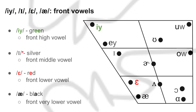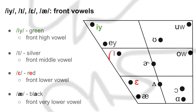E as in 'silver' is a front middle vowel. What this means is that when I say E, my tongue is in the front and the middle. Okay, middle — high, middle.